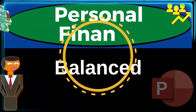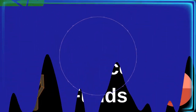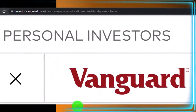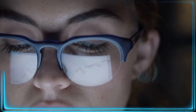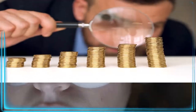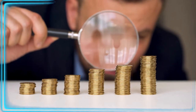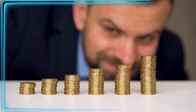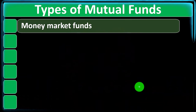Welcome to this Personal Finance PowerPoint Presentation on Balanced Funds. Most of this information comes from the Vanguard website at investor.vanguard.com. In prior presentations, we've been taking a look at investment goals, strategies, and tools, keeping in mind the two major categories of investments: fixed income, typically bonds, and equities, typically common stock.